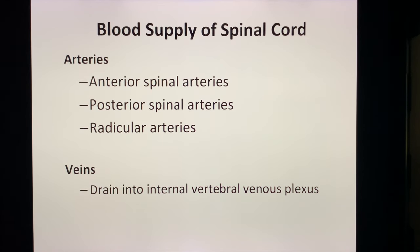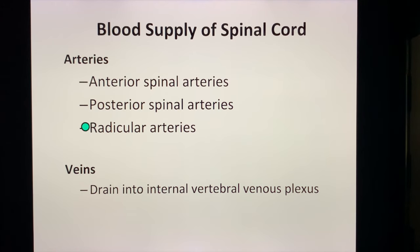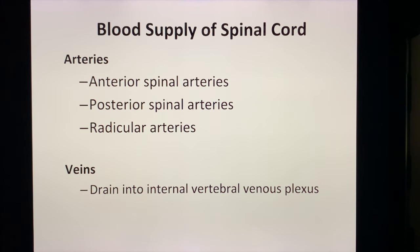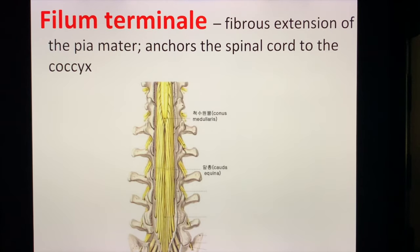For the blood supply of the spinal cord — a must-know for any anatomy or neuroanatomy exam — there are three major arterial supplies: the anterior spinal artery, the posterior spinal artery, and the radicular artery, which reinforces both the anterior and posterior. For venous drainage, the spinal cord drains into the internal vertebral venous plexus.